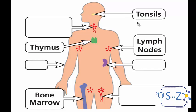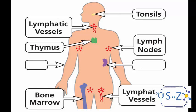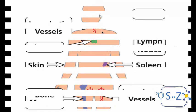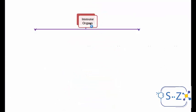Other examples of specialized lymph nodes include the appendix. We also have the lymphatic vessels located all around the body, and the spleen, which is found next to the stomach. We can also consider the skin as one of the organs of the immune system, because it is a natural barrier that stops the entrance of pathogens when it is intact and healthy.